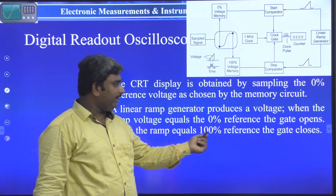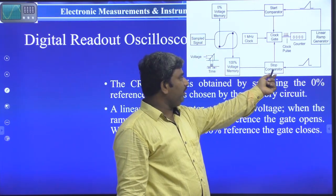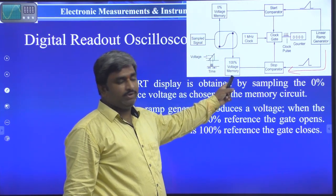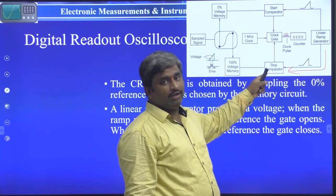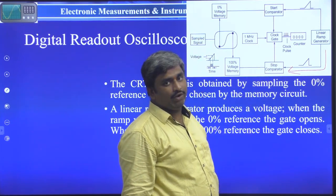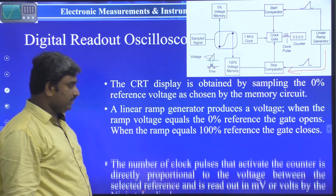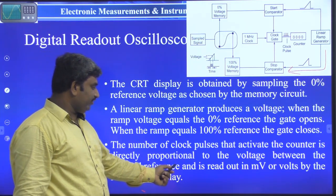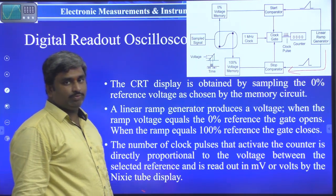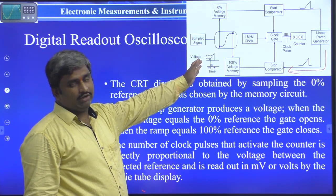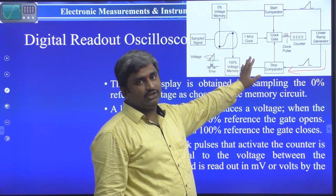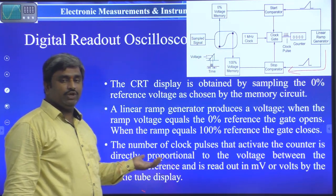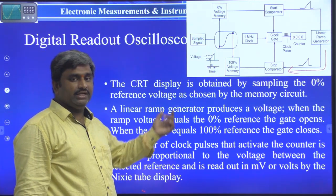When the ramp equals 100 percent reference, the gate closes. When the 100 percent voltage memory is given to the stop comparator and the ramp voltage also generates 100 percent of the memory voltage, and these two are equal, the gate is closed based on the stop comparator. The number of clock pulses activating the counter is directly proportional to the voltage between the selected reference, and the readout is displayed in millivolts or volts by the Nixie display. Based on the reference voltages and the comparator decisions, that information is displayed.